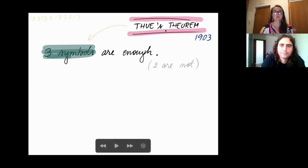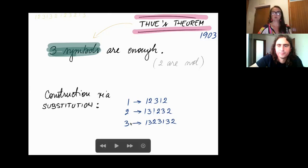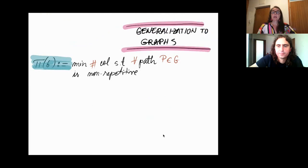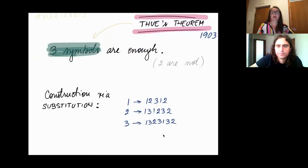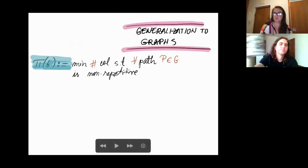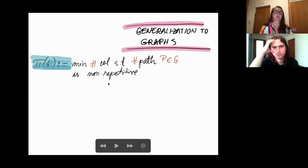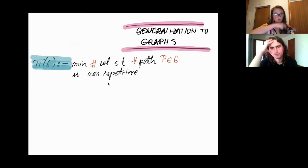You can generalize this to graphs, which was done about 20 years ago. The non-repetitive chromatic number of a graph, denoted pi, is the minimum number of colors such that every path in the graph is non-repetitively colored. If you take any path and check the colors on that path, they form a non-repetitive sequence. Note that a non-repetitive coloring is also a proper coloring, since two adjacent vertices colored with the same color would be a repetition. It is also a star coloring, where any two color classes induce a forest of stars.